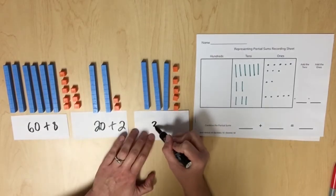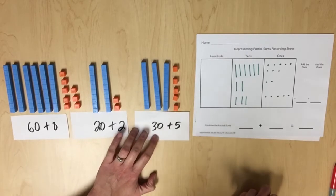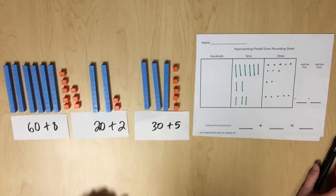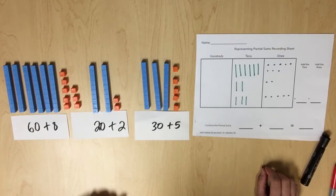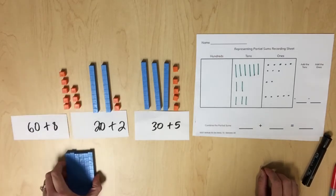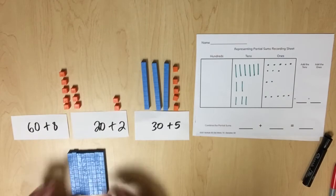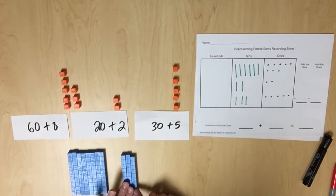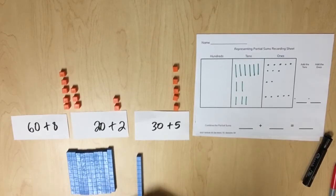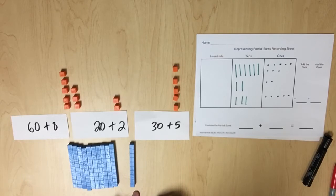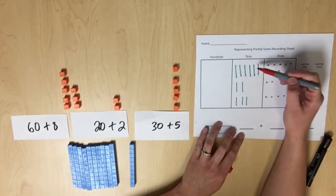Now we will determine the partial sums of the tens by combining the tens and recording the corresponding equation. When we combine the tens, we have 60 plus 20, that's 80, plus 30 more. We can compose 100 — we have 10 tens to compose 100 — and we have 110 left. So the value of our tens is 110. In our pictorial representation we can see that we have 11 tens.